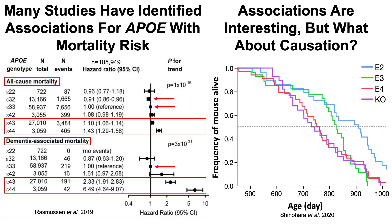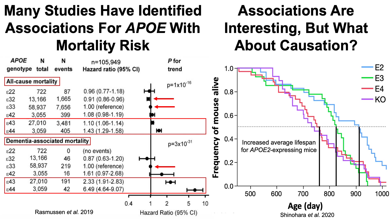Associations are interesting, but what about causation? To test that, Shinohara's group engineered mice to have either ApoE2 in blue, ApoE3 in green, ApoE4 in red, and then completely knocked out the ApoE gene in purple. Looking at survival plotted against age, just like the human data — though that was association, this gets more at causation — we can see that mice with the ApoE2 gene lived the longest, ApoE3 carriers lived intermediate, and ApoE4 carriers lived the shortest, again just like the human data.